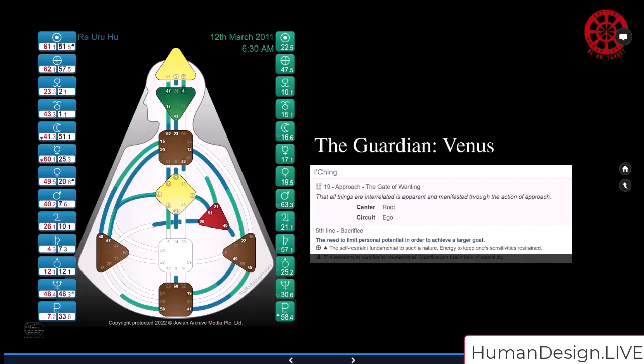So everybody, each and every one of us, when we leave this plane, the guardians that open the door for us, they pronounce on our lives. It's really something to think about. They actually describe what our general holistic process has been. Why was that person here? What were they here for? So here was what Ra was here for: the energy to keep one's sensitivities restrained, the need to limit personal potential in order to achieve a larger goal. You can see it was creating a harmonic channel thanks to his Venus in his own design, his natal design, the 49.5.